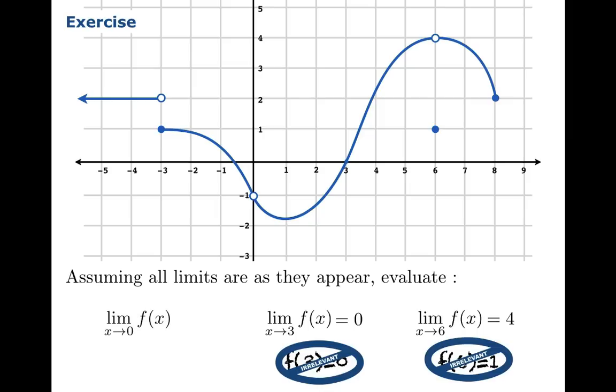As the argument approaches 0, the function value seems to approach negative 1. And you'll notice that in this case, f of 0 is not even defined. 0 is not in the domain of the function. And once again, that fact is irrelevant. Limits have everything to do with the journey and not the destination.